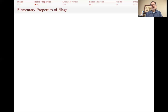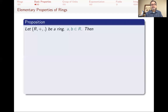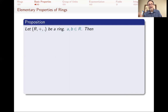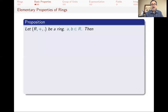There are some elementary properties of rings I want to go over. If you have a ring with elements a and b, some things from high school are still true in this general abstract setting — though they need to be proved, not just assumed.